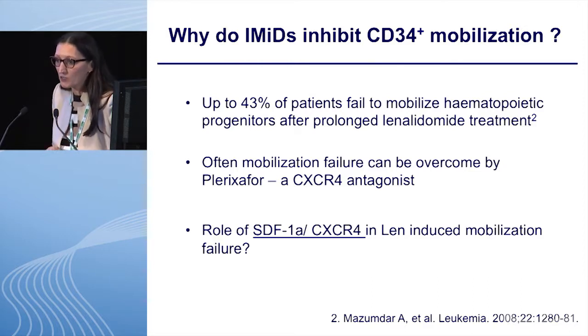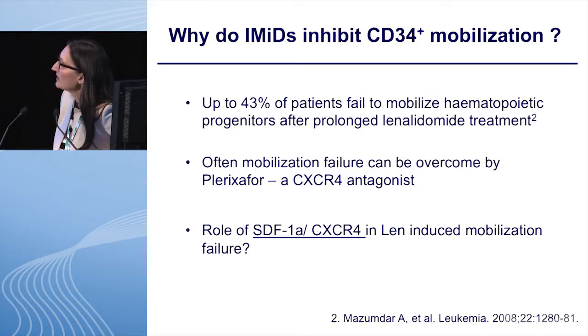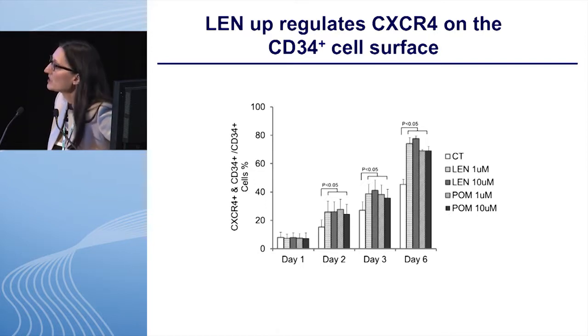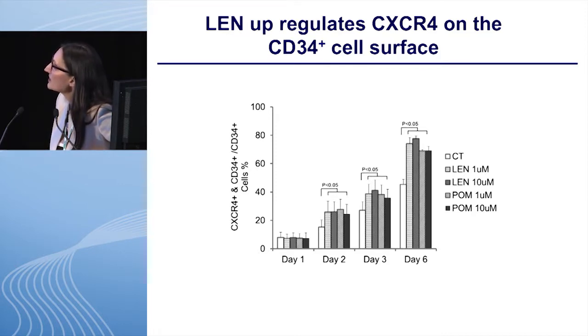I still owe you an answer to the second question: why do we have mobilization failure in patients who received long-term treatment with IMIDs? We know that 43% of patients fail to mobilize hematopoietic progenitors after prolonged lenalidomide treatment, and that this mobilization failure can often be overcome using plerixafor, a CXCR4 antagonist. We asked: what is the role of SDF1-alpha — the ligand for CXCR4 — in lenalidomide-induced mobilization failure? We treated CD34 cells with lenalidomide and pomalidomide and analyzed CXCR4 receptor expression, finding an increase of CXCR4 on the cell surface.